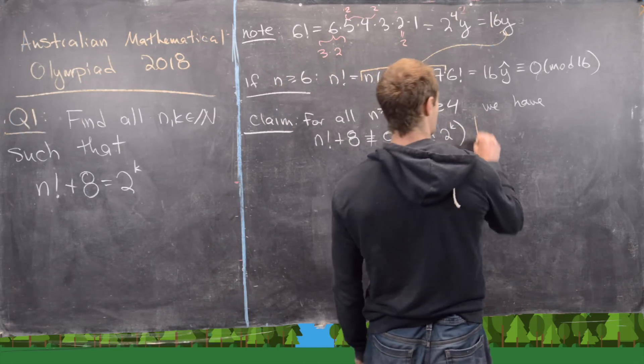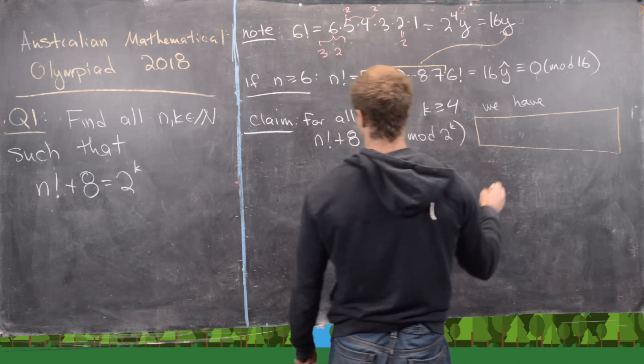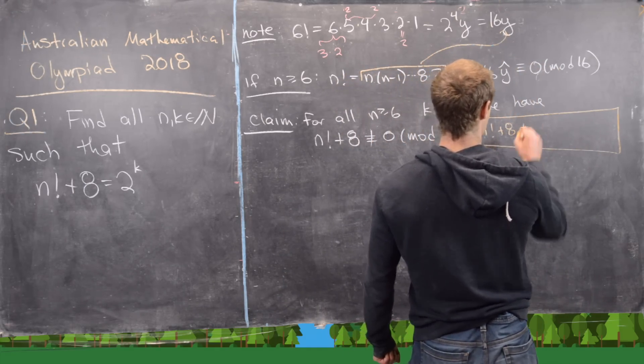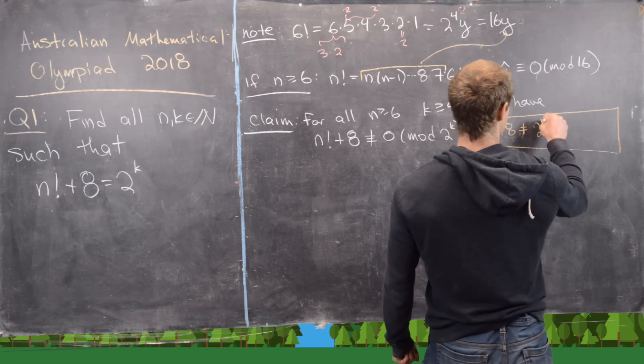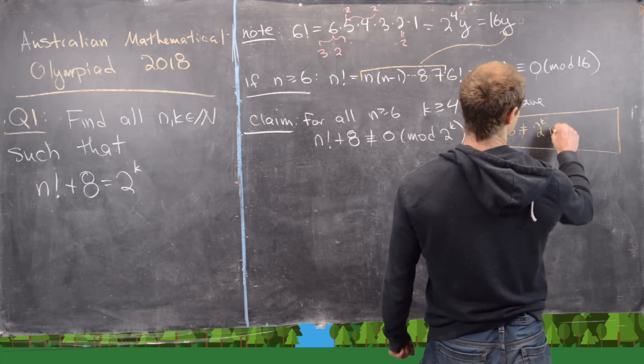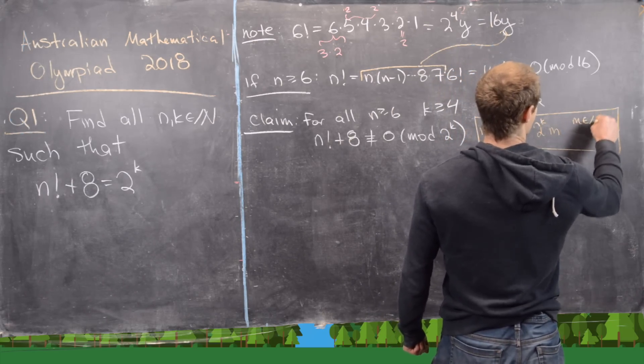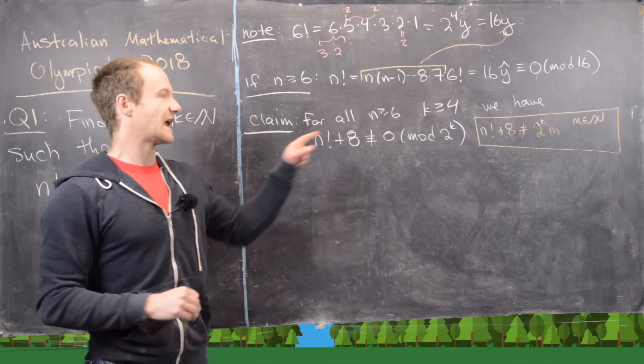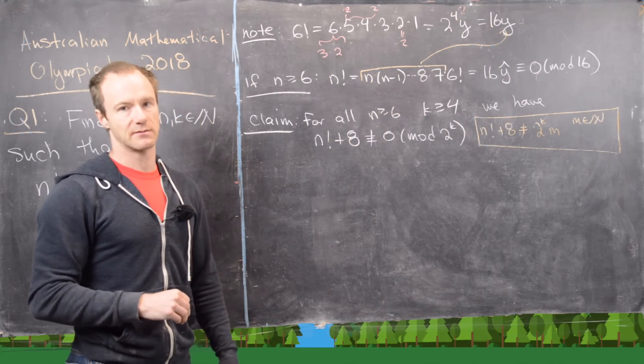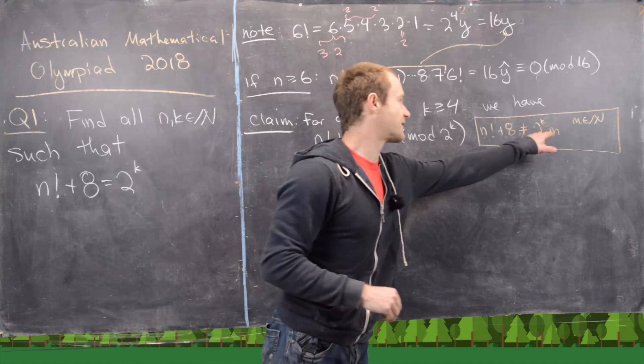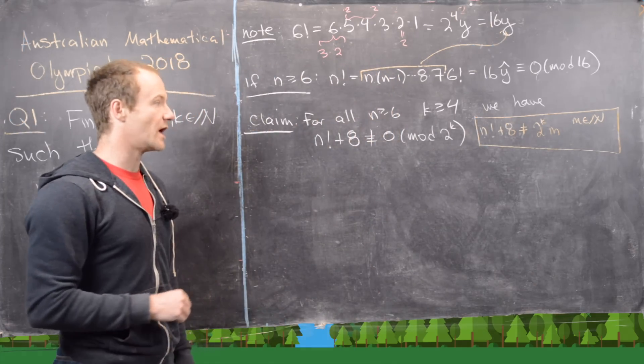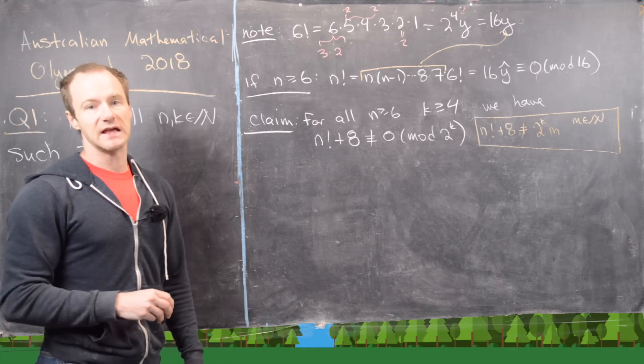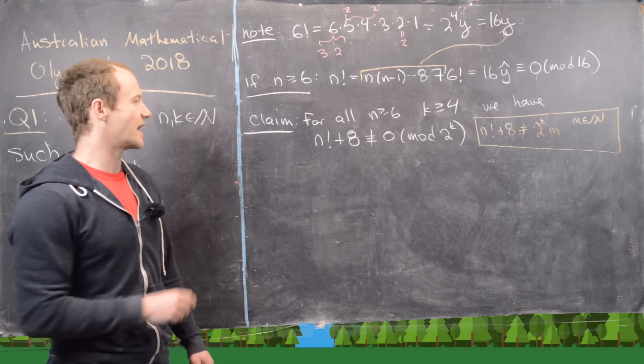And so let's go ahead and say what that means. That means that n factorial plus 8 is not equal to 2 to the k times some number m, where m ranges over all of the natural numbers. So we can't find it for any natural number, which means we can't find it for the natural number m equals 1, which means there are no solutions past n equals 6.